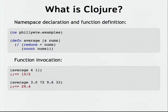If you've never read Lisp code before, basically you read it from the inside out. The parentheses are maybe in a different place from where you're used to seeing them, but they're actually not all that strange once you get used to them. Here's just a little function defined in a namespace called Philly ETE examples. Then 'defn' means I'm defining a function called 'average', and then I have the arguments to the function in brackets.